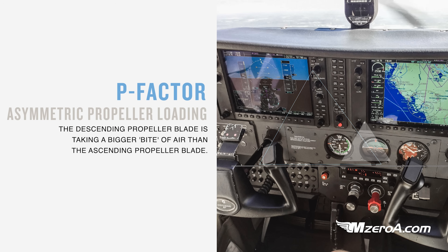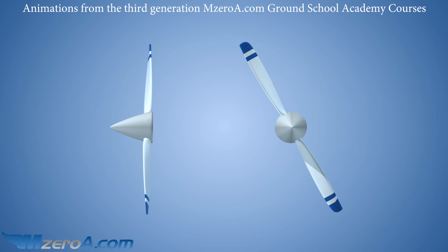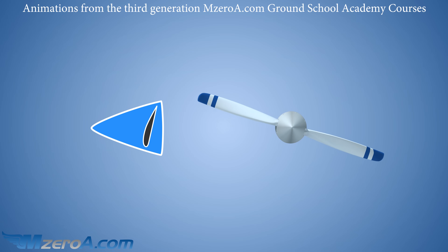The first — we'll start with the easiest — is P-factor. It's technically called asymmetric propeller loading, which says the following: the descending propeller blade is taking a bigger bite of air than the ascending propeller blade. It has that greater angle of attack. Remember, our propeller is simply just a wing — it's creating lift and has that critical angle of attack. P-factor is one of our four left turning tendencies.